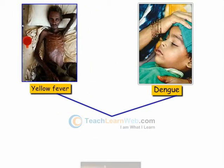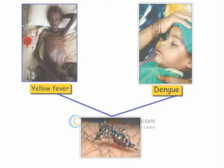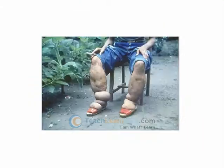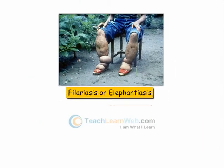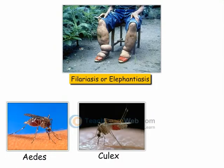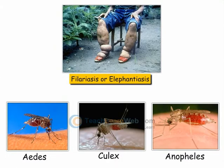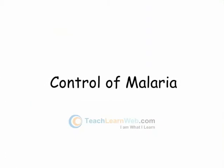Aedes mosquito causes Filariasis or elephantiasis. Culex and Anopheles mosquitoes also spread diseases. Control of malaria.